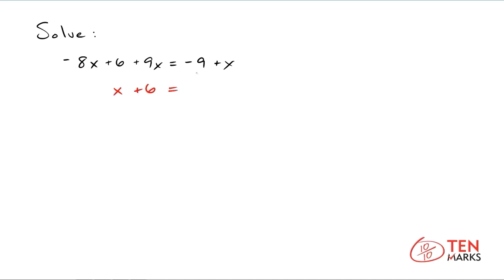And there are no like terms on the right, so this stays the same. Now what you can do is subtract 6 from both sides to bring the constant terms to the right side. So you're left with x equals negative 15 plus x. And you can simplify this even further by subtracting x from both sides of the equation, and you get 0 equals negative 15.